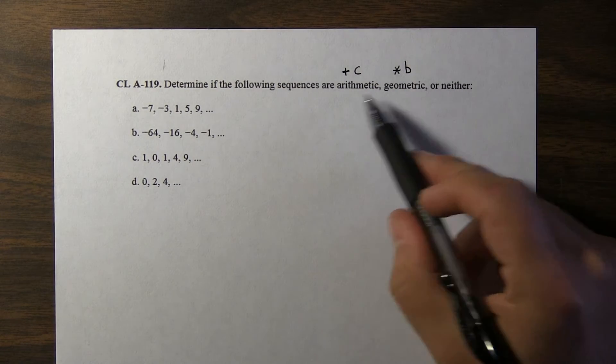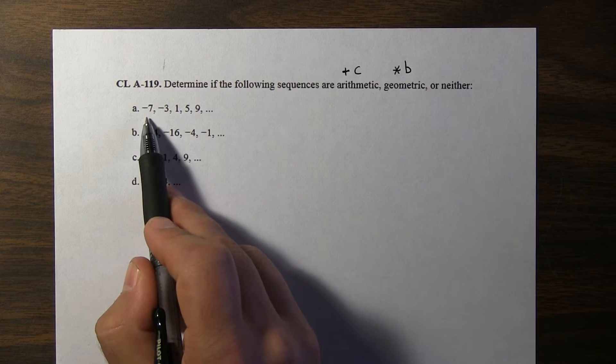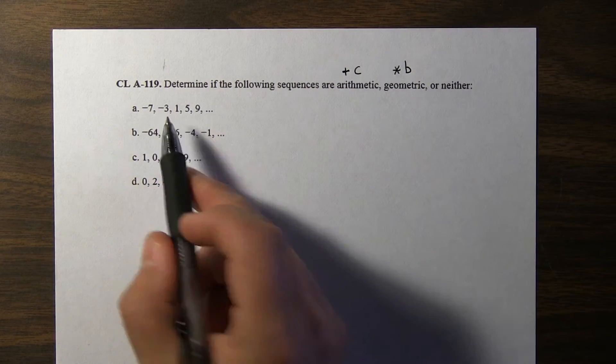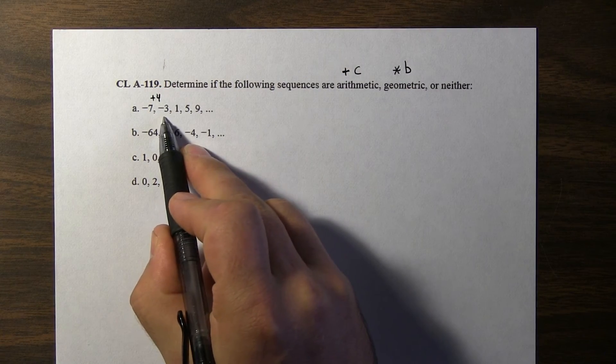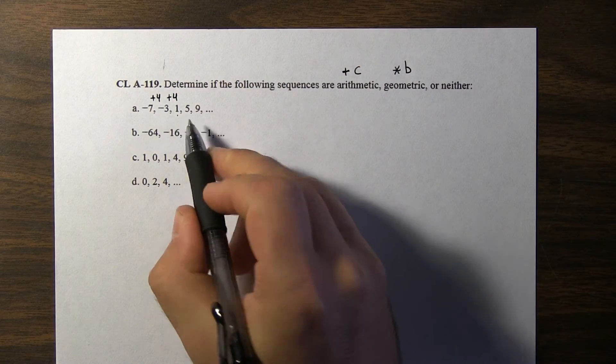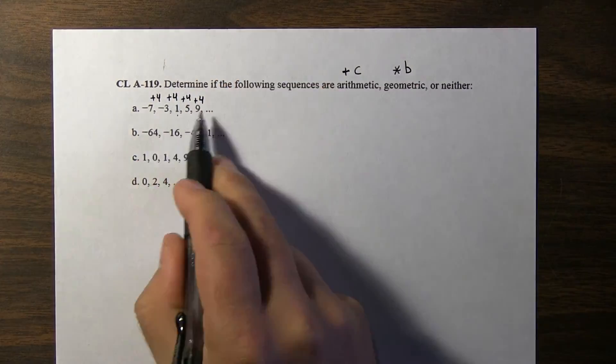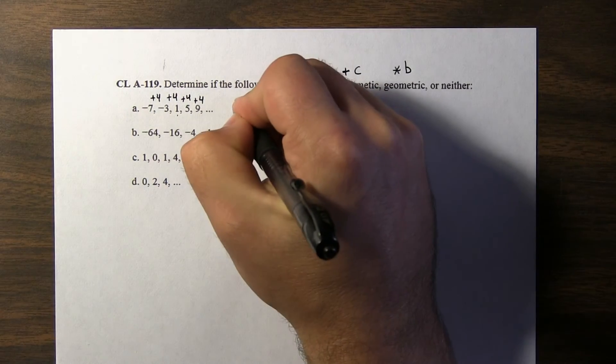If it's neither, it just doesn't do one of those two things consistently. So from negative 7 to negative 3, I see you're adding 4. Because negative 7 plus 4 is negative 3. Also, negative 3 plus 4 equals 1, and 1 plus 4 equals 5. So this one, since we're adding the constant 4 to each term to get the next term, it's arithmetic.